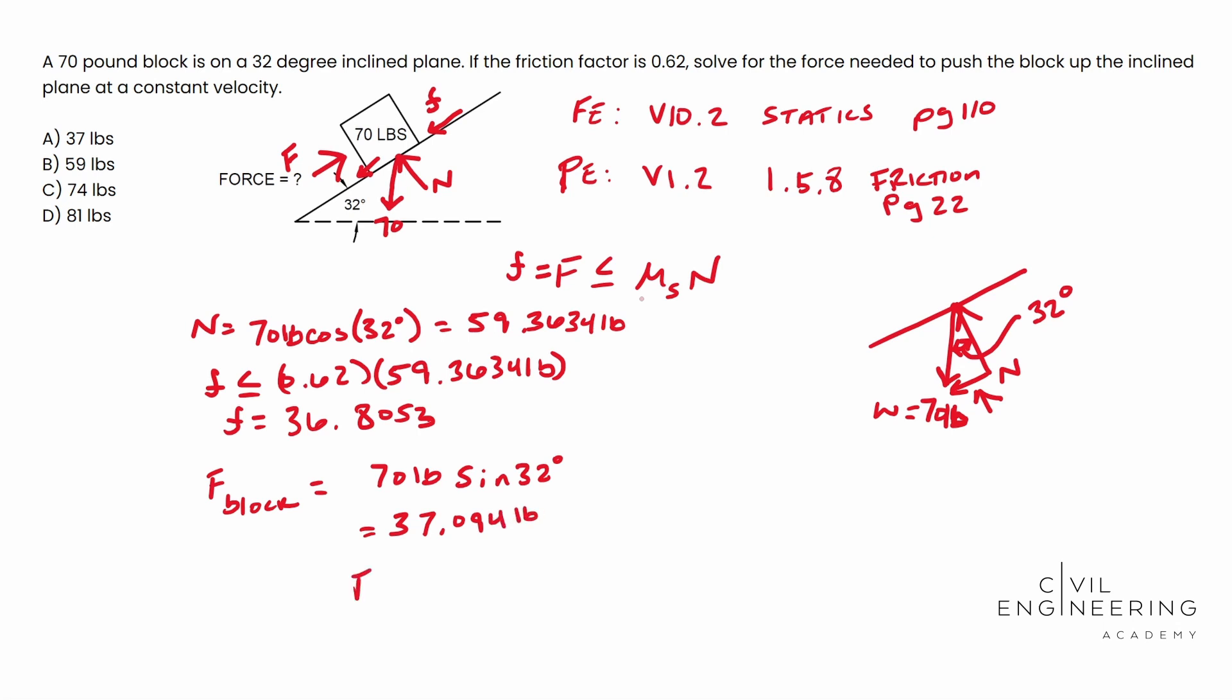What we need to do is solve for the total force. That is the force of friction plus the force of the block. This ends up being 73.90 pounds, and notice they give you 74. They give you a most nearly answer here, so they rounded up. The answer is C on this one. I hope it clears some things up. I hope it makes sense. We'll catch you next time.